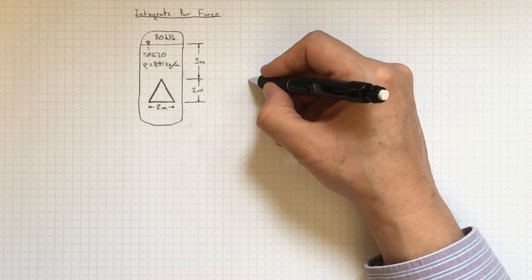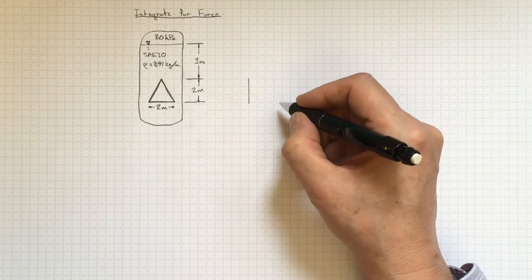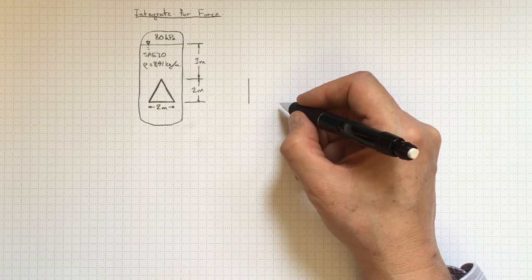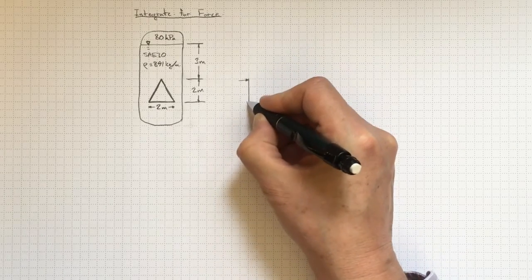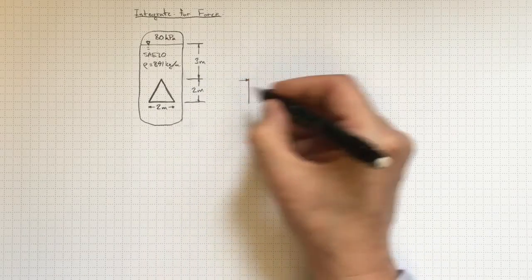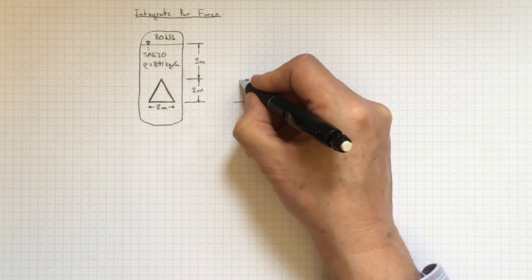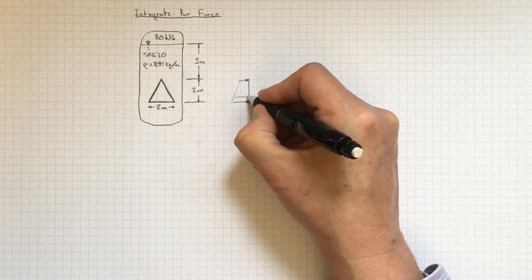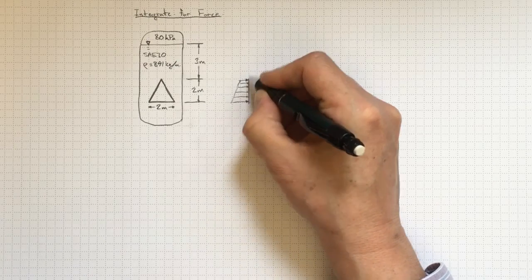Now, if we look at it from the side, we can treat that triangular hatch as a flat plate. And it's going to be subject to pressure all over the hatch. There'll be a pressure at the top of the hatch. And at the bottom of the hatch, lower down in the oil, the pressure will be higher. And there'll be a linear variation with depth as we go down the height of that hatch.